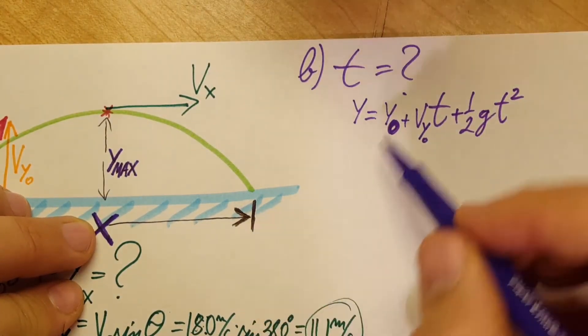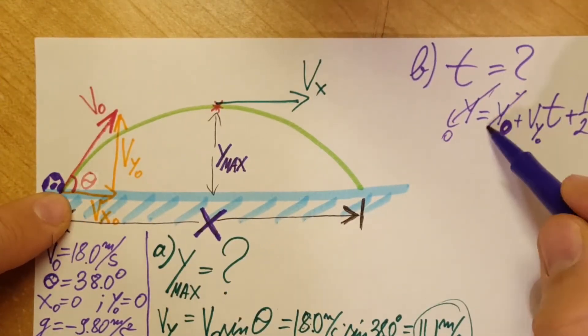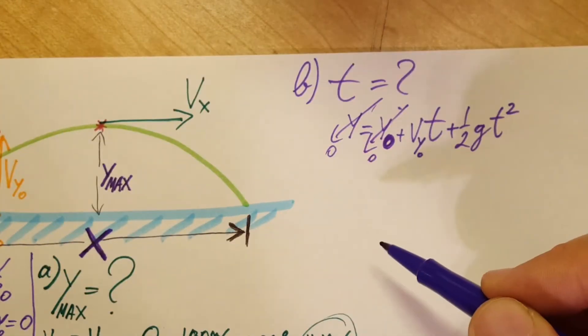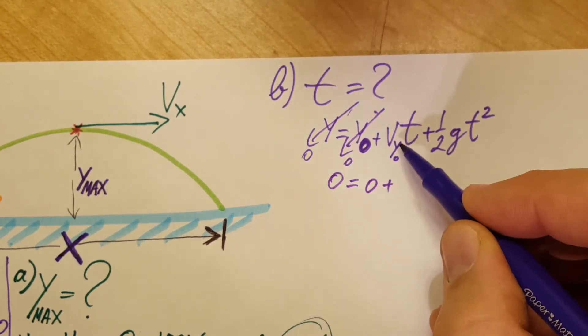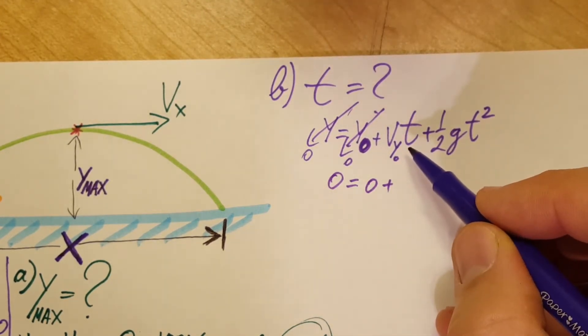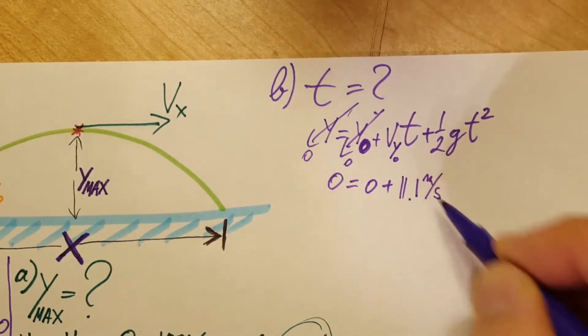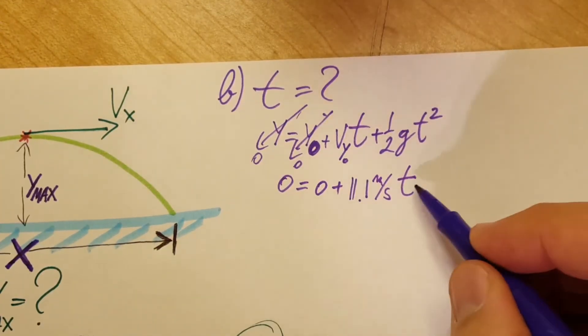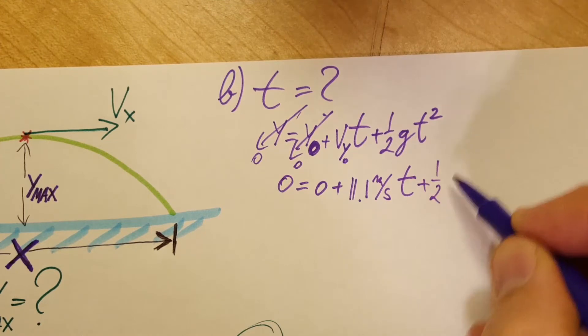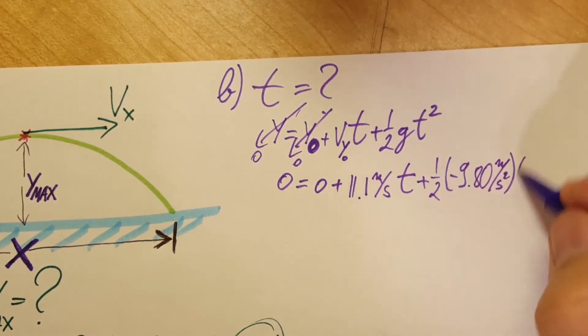Now, y_final is zero. y_initial was zero. These two are zero, zero. So zero equals zero plus v_y_naught. We calculated this and we found the value to be 11.1 meters per second times t plus one half. g we know, -9.8 meters per second squared and t².